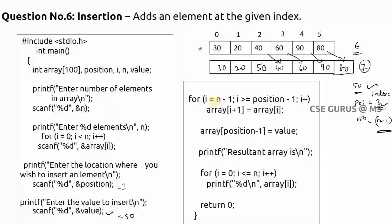In the loop, i starts from n minus one. In our example n is six, so i starts at five. The loop runs from five down to position minus one, which is two. Inside the loop: array of i plus one equals array of i. So when i is five, array of six equals array of five - meaning 80 is moved to index six.